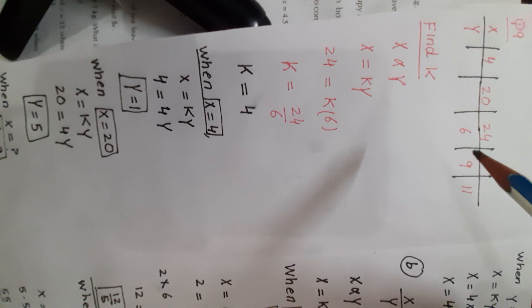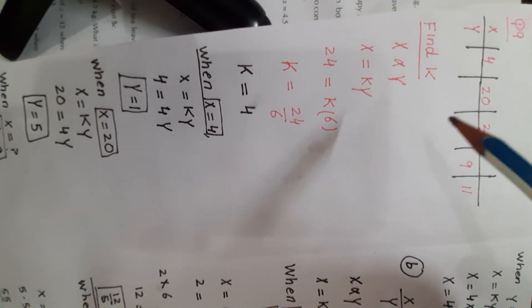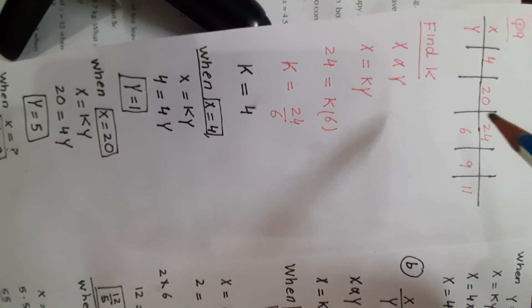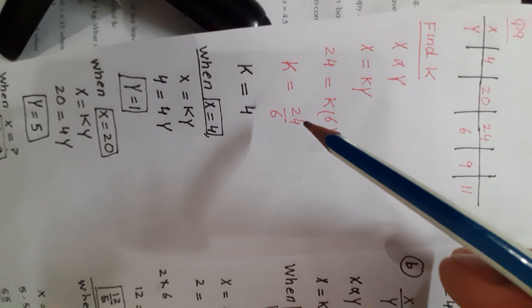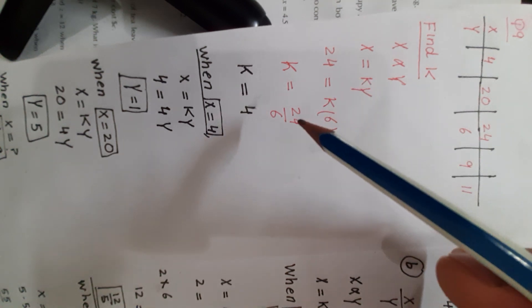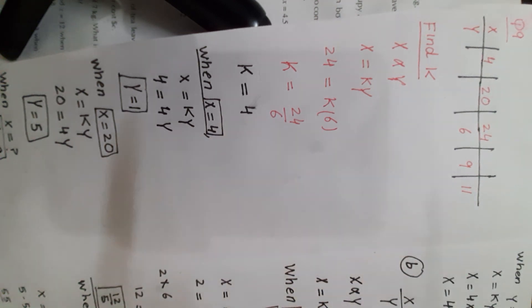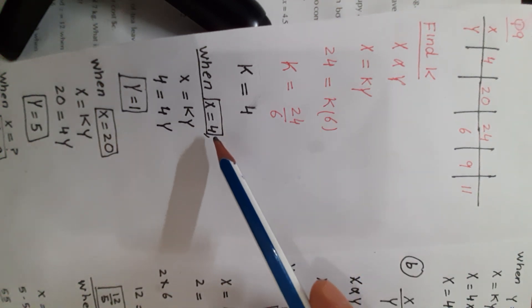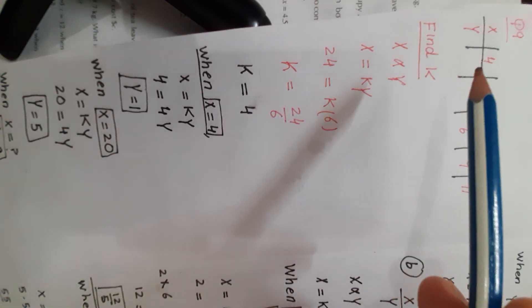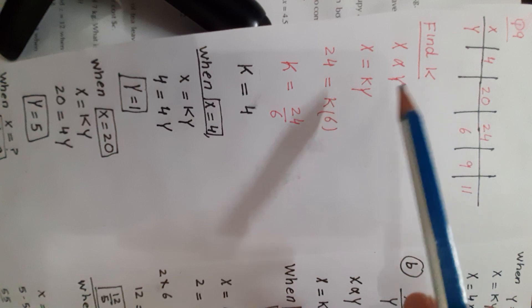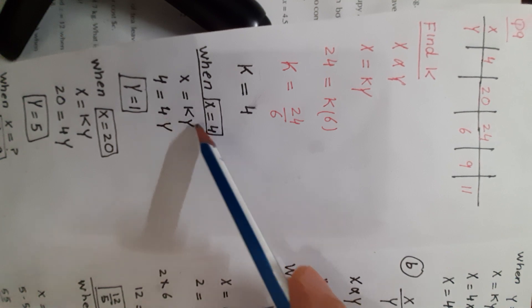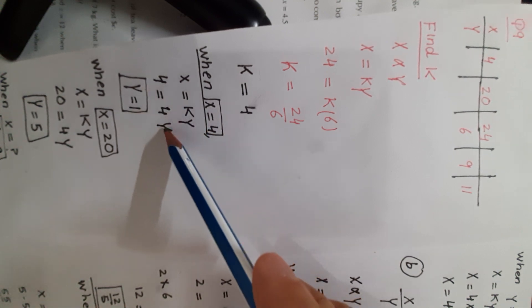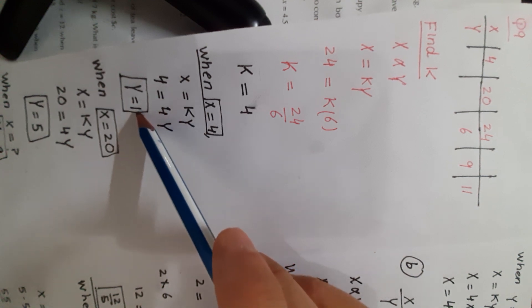Look for the column where you have both values of x and y. Here x is 24 and y is 6. Using these two values, find k: when x is 24 and y is 6, k equals 24 divided by 6, so k equals 4. After obtaining k, find the missing values. When x is 4, use x equals ky: 4 divided by 4 gives y equal to 1.